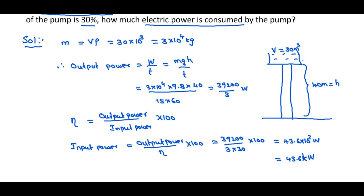This is the electric power consumed by the pump, but the output it is giving is only 39,200 divided by 3 Watts, because of the lower efficiency — its efficiency is only 30 percent.